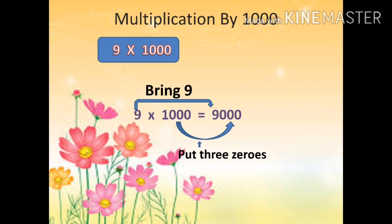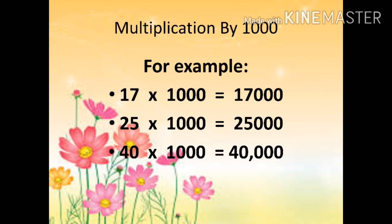Let's see some more examples. First example: 17 multiplied by 1000. We will write 17 as it is and add three zeros, and it becomes 17000. Second example: 25 multiplied by 1000 equals 25000 — we keep 25 as it is and put three zeros. Third example: 40 multiplied by 1000 equals 40000 — we write 40 as it is and put three zeros.